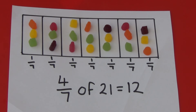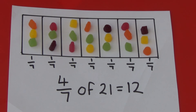For four-sevenths of twenty-one, the denominator is seven which tells me I need to divide my bar into seven sections and share my twenty-one sweets between the seven sections. The numerator is four so that tells me I need to find out how many sweets are in four of the sections all together. Each section has three sweets, which tells me one-seventh of twenty-one is three. To work out how much four-sevenths is, I need to count how many sweets are in four sections: one section has three, two sections have six, three sections have nine and four sections have twelve. So four-sevenths of twenty-one is twelve.